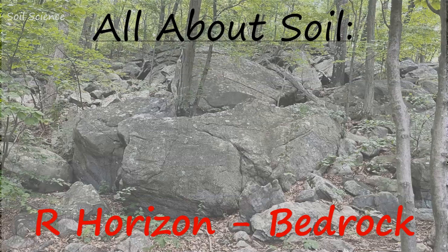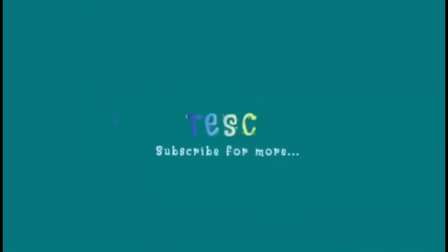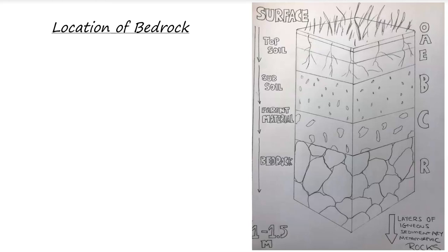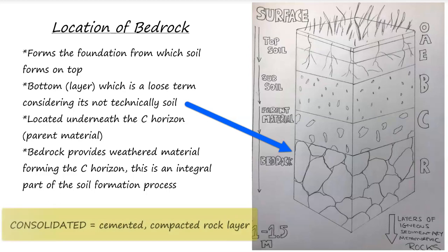We have to look at what's called the R horizon, commonly known as bedrock. The bedrock is the foundation, the lower layer upon which the soil is built. It's generally going to be between one to one and a half meters down below the surface — though it could be two meters down depending on location, or it could be very close to the surface where within a few inches or centimeters you would hit this solid consolidated rock layer, which is called the R horizon.